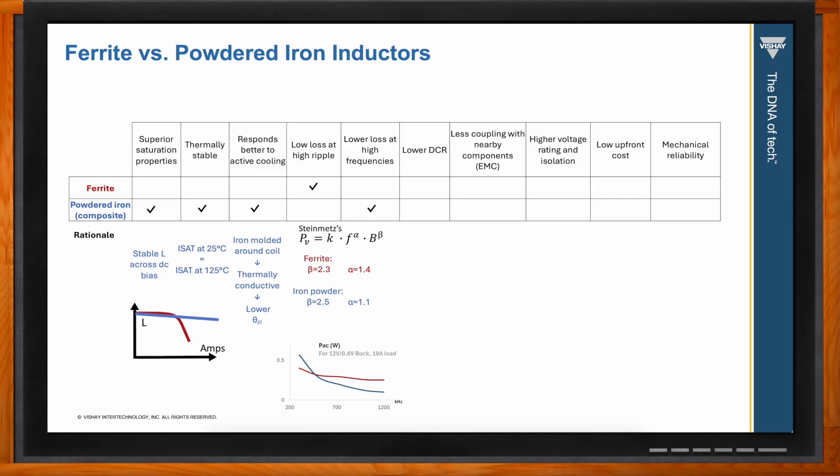In real life, if you take a buck converter, fix the voltage and current conditions, but allow switching frequency to change, you can see the crossover point where the frequency component dominates and the powdered iron inductor becomes the more efficient option. Ferrites, however, tend to have lower DCR due to higher material permeability.